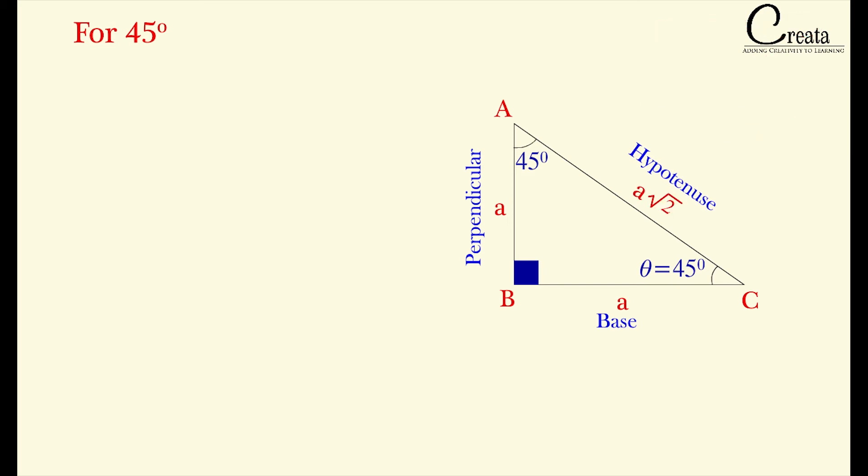Now all the sides and angles are completed. Let's see the trigonometric ratios. First sine. Sine theta is equal to P by H, that is perpendicular over hypotenuse. Theta is 45 degree, perpendicular is A and hypotenuse is A root 2. So sine 45 degree will be A by A root 2, that will be 1 by root 2.